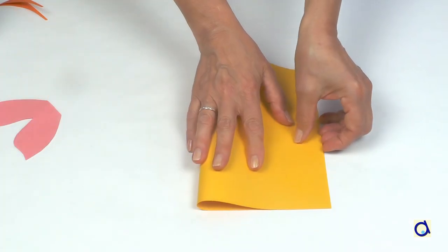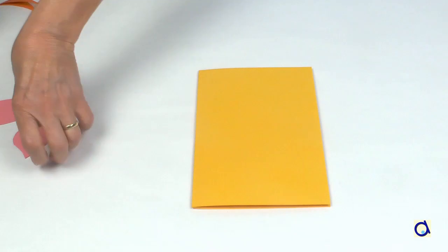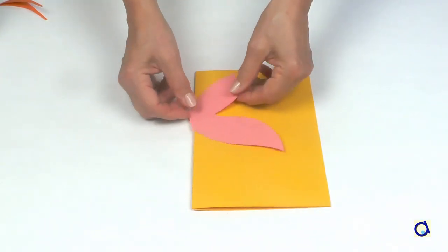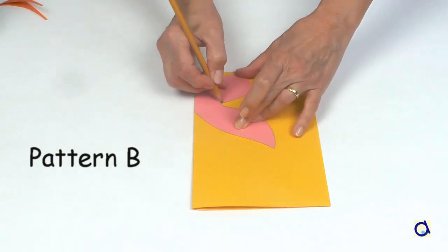Now take a sheet of construction paper in a contrasting colour. Again, fold the sheet in half. Take the pattern B and proceed as for the large pair of wings.